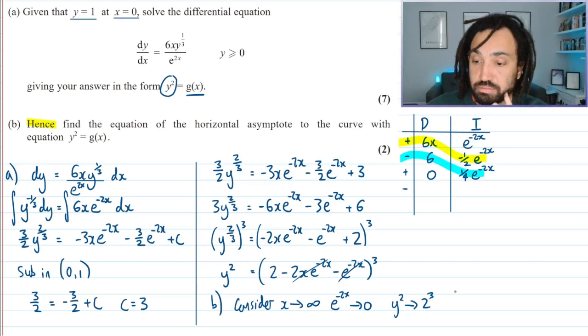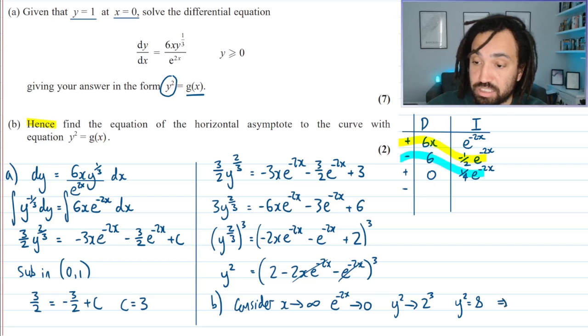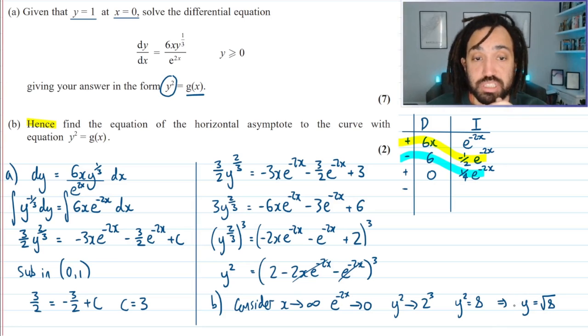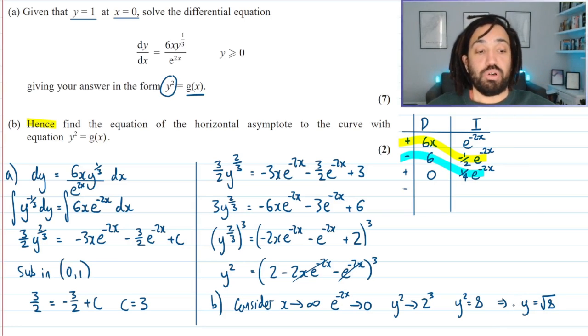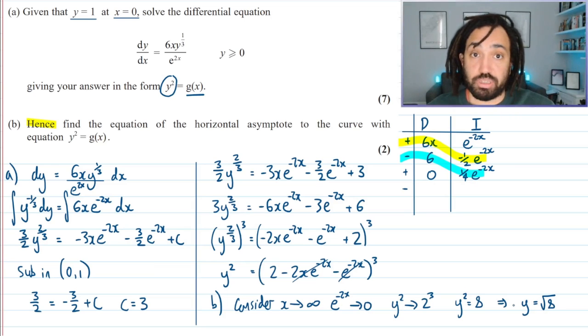Okay so that means that it's going to tend towards y squared is equal to 8 which in fact is going to give me a horizontal asymptote when I square root both sides of root 8. So y is equal to root 8 is the horizontal asymptote that it will tend towards. Right I hope you enjoyed that and I'll see you tomorrow for some more tricky questions. Bye for now.